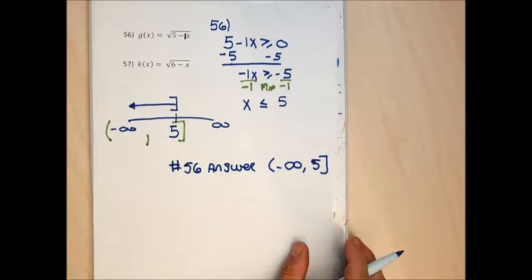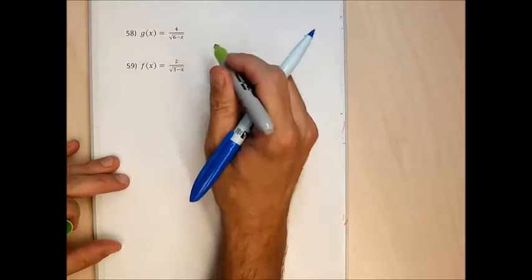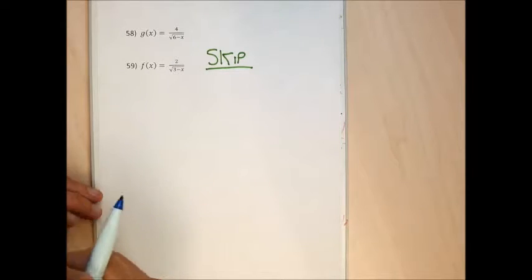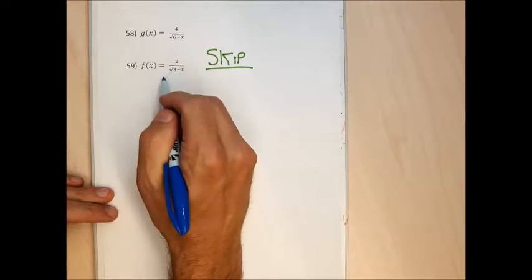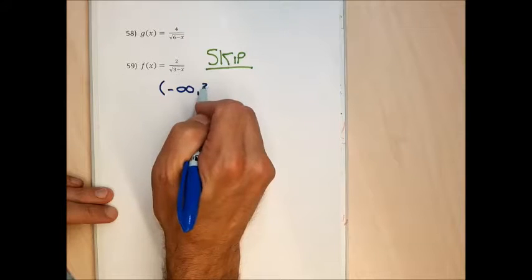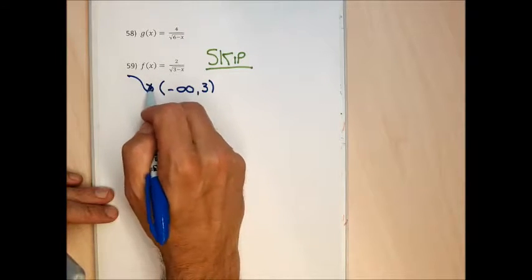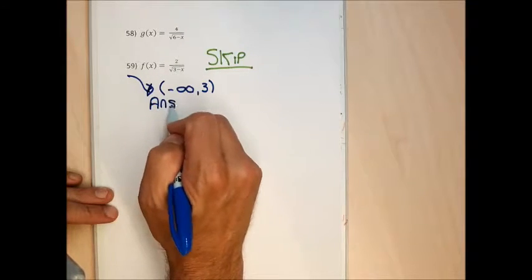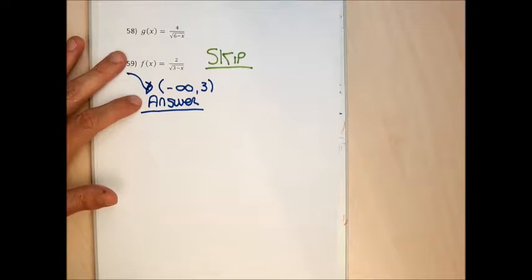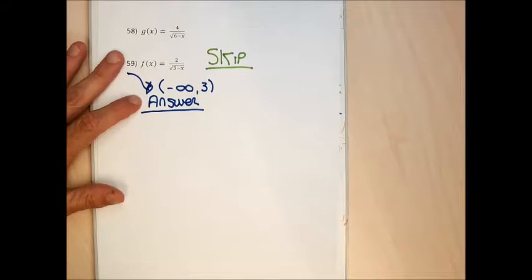Problem 57 works the same way. For problem 59, if you want to try it, the answer is (-∞, 3) with a round bracket. These won't be on the test, and it's not a critical skill for calculus. If you try it and don't get that answer, stop by or ask in class.